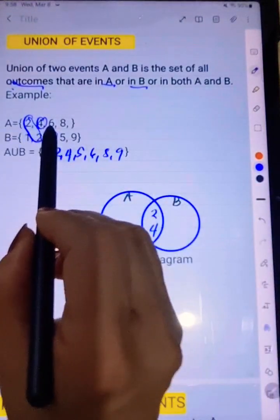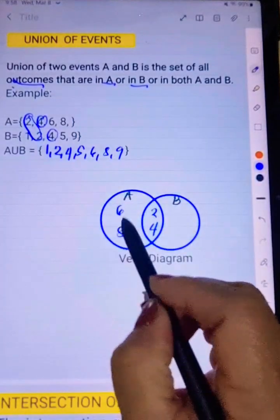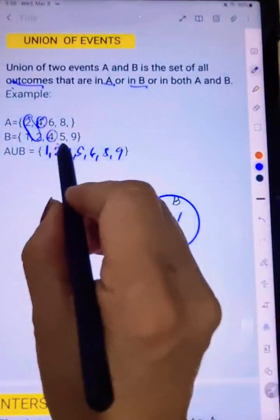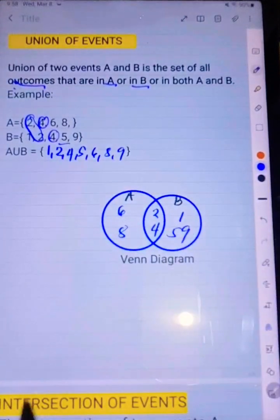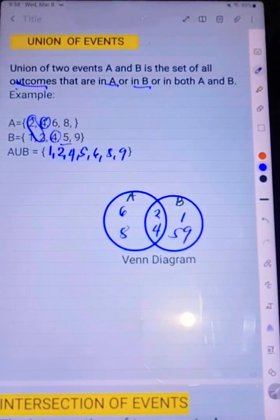And then the remaining for A, we have 6 and 8, so write it here. And for B, 1, then 5, and 9. So that's how you're going to present using Venn diagram.